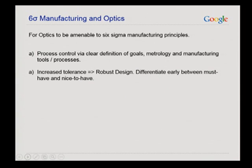How do you make optics amenable to six sigma manufacturing? You have to indulge in process control via definition of goals, metrology, and then think about increased tolerance. Increased tolerance doesn't mean sacrificing performance — it really means differentiating what is must-have versus nice-to-have, which comes back to the paradigm of application-specific optical design. If you have a design that can be made more tolerant, that means you have still not completed the design effort yet.